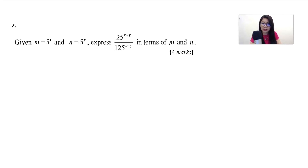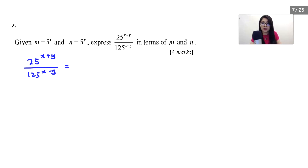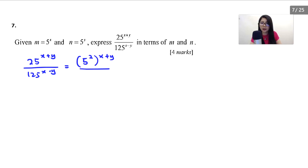Let's solve this. We write down the question: 25^(x+y) over 125^(x−y). Next, I'm going to make 25 and 125 into base 5. So 25 is 5 squared, whole thing to the power of (x+y), over 125 which is 5 cubed, then (x−y). After that I'm going to break it up — this becomes 5 to the power of 2x.